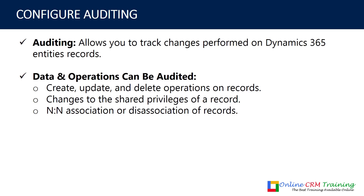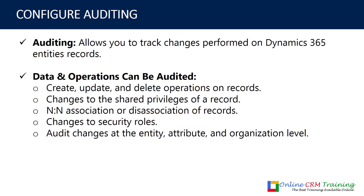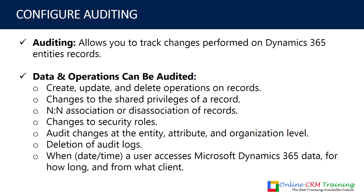Also, if there is an association or disassociation of records — for example, many-to-many relationships — if you disassociate a record, you will know that it was done for a particular record. Additionally, any changes to security roles, audit changes at the entity level, attribute level, or organization level can be tracked. You can also track deletion of audit logs — who deleted the log and when.